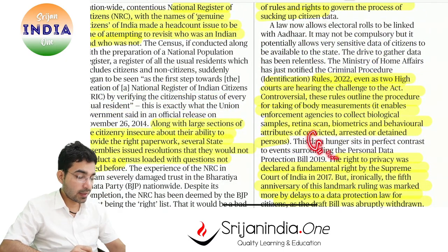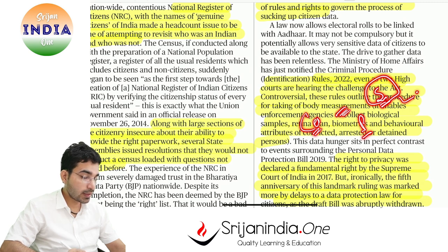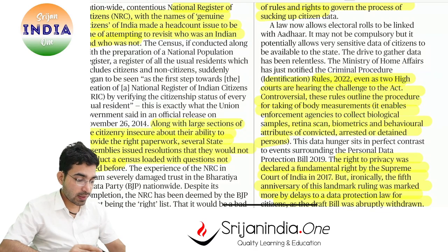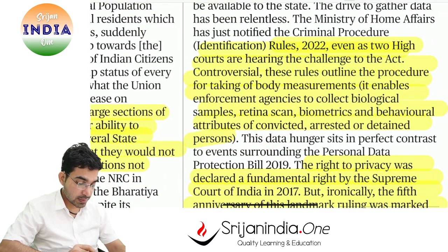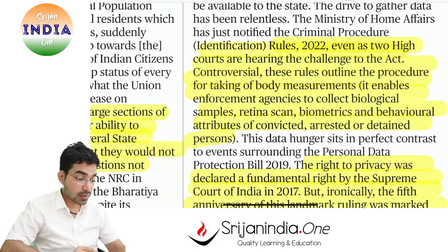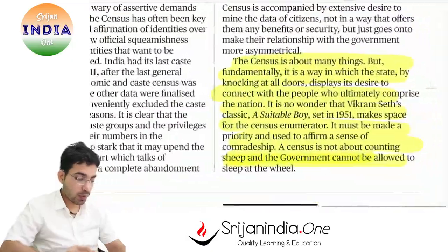There is also the question of privacy - whether collecting criminals' data goes against privacy rights. Census data can be sensitive - how will it be handled? A fine line is needed regarding privacy. If government is collecting biometrics like retina or behavioral attributes, or biological samples of convicts and arrested persons under the Criminal Procedure Identification Rules, privacy becomes an important issue.